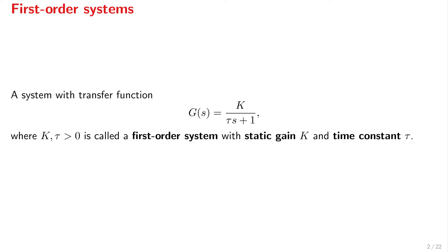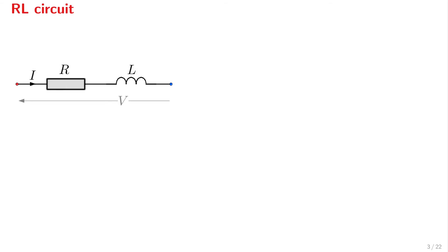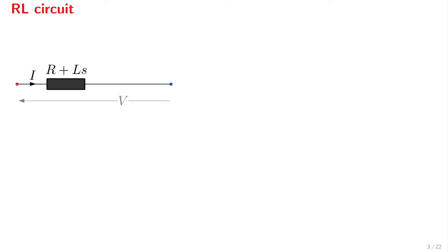K is called the static gain of the system and tau is the time constant. A simple example of a first-order system is a series RL circuit with input variable the voltage across it and output variable the current that runs through it. Think of these as cause and effect — V is the cause and I is the effect. We know that the impedances of these two elements are R and Ls, and we can combine them into a single impedance of value R plus Ls. According to the definition of impedance, which is voltage over current, we have V over I equal to R plus Ls.